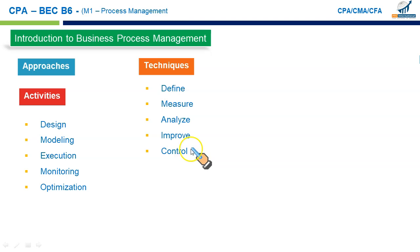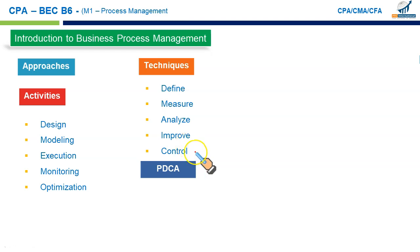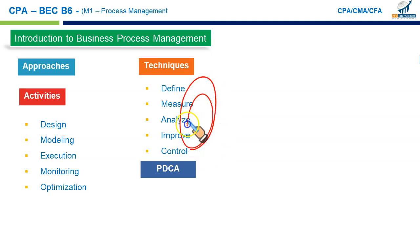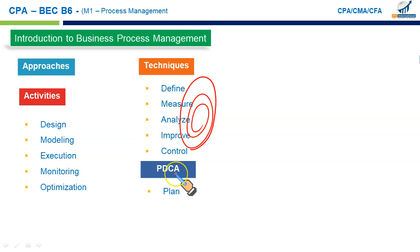It's a cyclical process with many iterations — after identifying problems at the control stage, you may go back and repeat the cycle for continuous improvement. The next technique is PDCA, which stands for Plan, Do, Check, and Act.